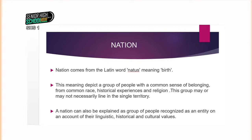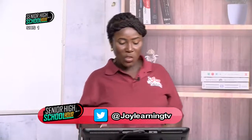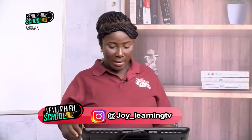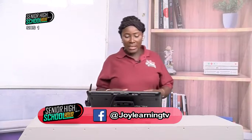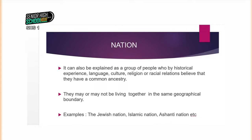When we talk about a nation, we are talking about a group of people with a common sense of belonging. They are related to each other even though they may not come from the same heritage or ancestry. They may have come from a common race, a common historical experience, or sometimes through religion. Therefore, we say that these people share linguistic, historical, and cultural values. A nation is also described as a large group of people who, by historical experience, language, culture, religion, or racial relations, believe they have a common ancestry, and they may or may not be living together in the same geographical boundary.